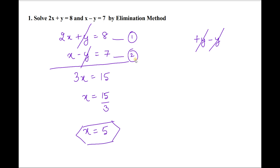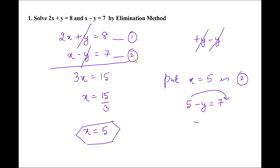Now to find the value of y, put x = 5 in any one of the equations. I will put it in equation 2: replacing x by 5 gives 5 − y = 7. Shifting 5 to the right: −y = 7 − 5 = 2. Therefore y = −2.